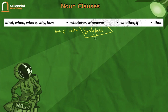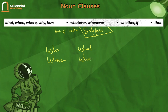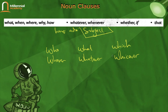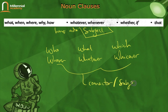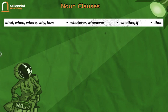However, there are also some connectors that are not followed by a subject, because the connector itself functions simultaneously as the subject. These are: who, whoever, what, whatever, which, and whichever — six connectors in noun clauses that serve a dual function: as connector and as subject. Let's check out some examples that will help you understand more clearly.